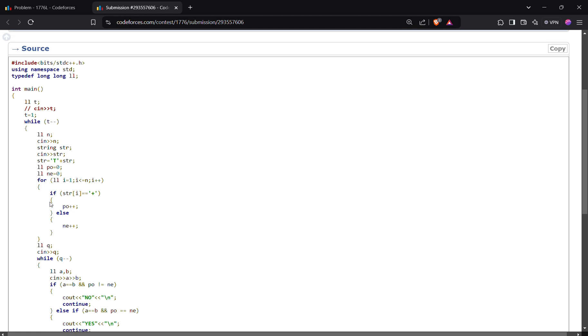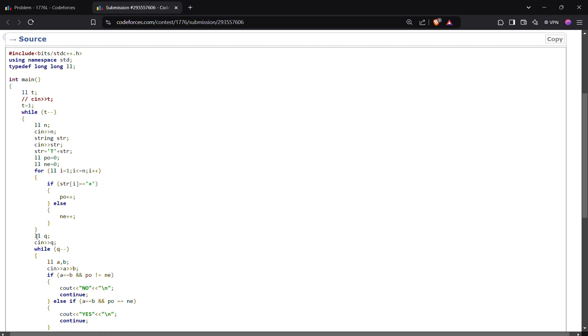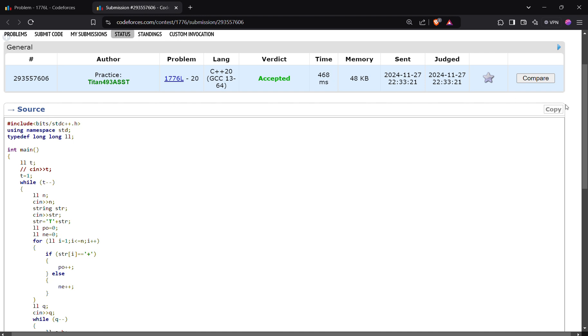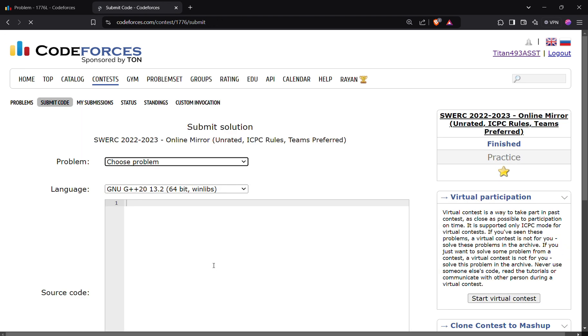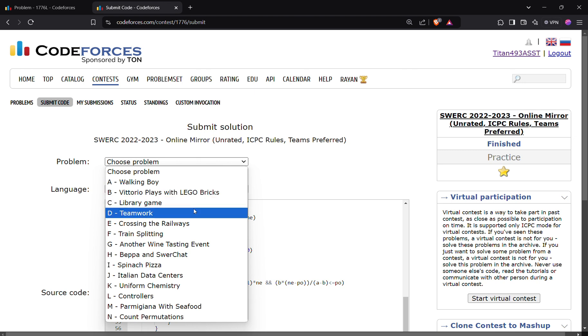One more thing: you could have optimized this further. In the question they didn't state that the string will have at least one character which is different from all other characters. Before we take input, you could have used one bool variable to check that if the string consists of only one character then it is impossible to get the score back to zero. Let us try to submit that also, it should take less time.